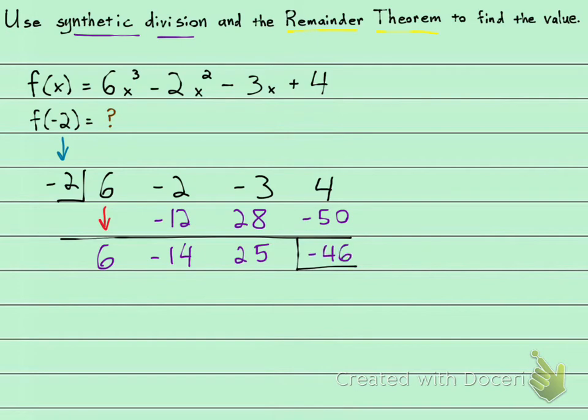Okay? And that was actually pretty quick, right? So if I took negative 2 and I plugged it in, I would get the same thing as with this remainder theorem. Negative 46. That is my answer.